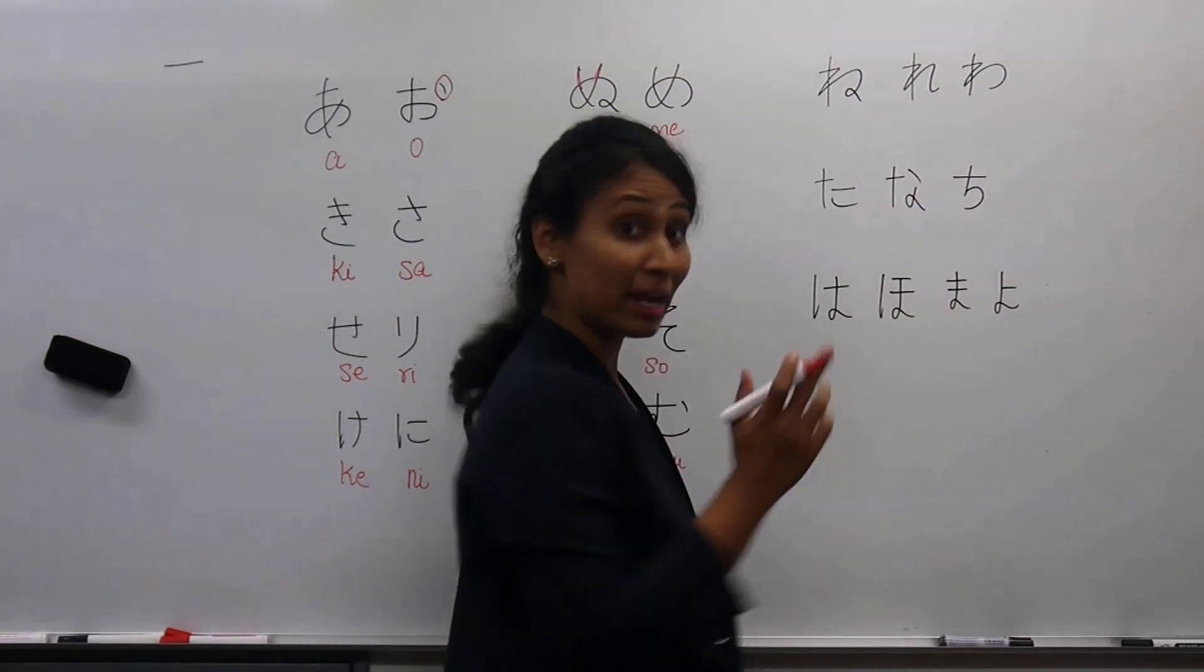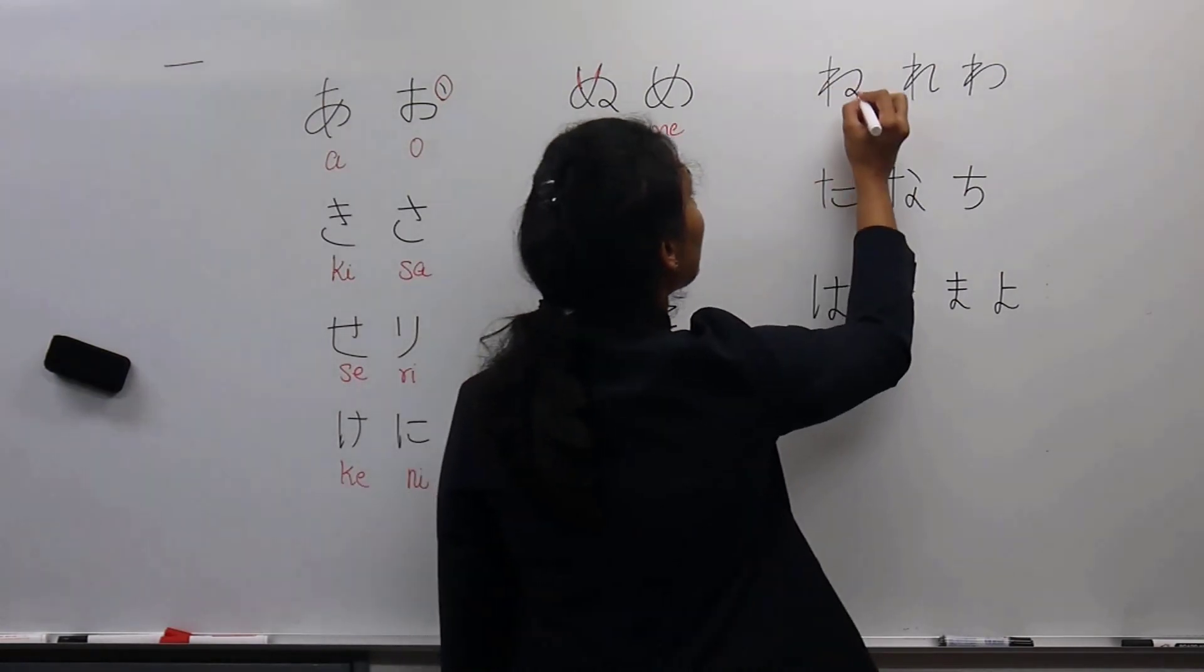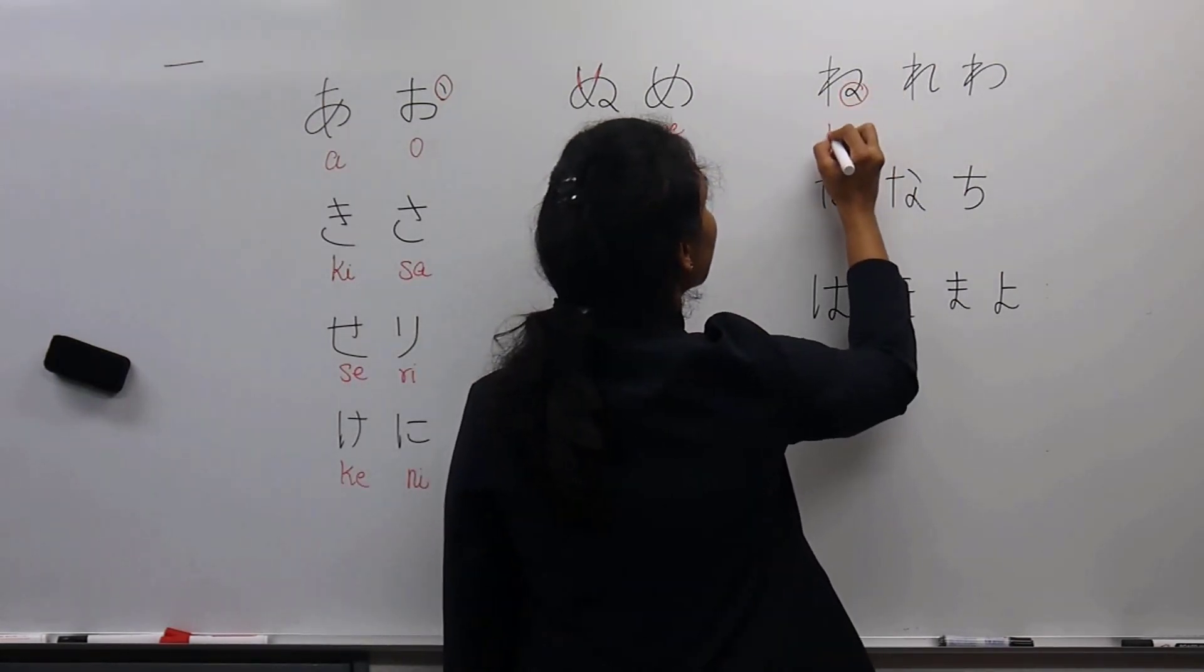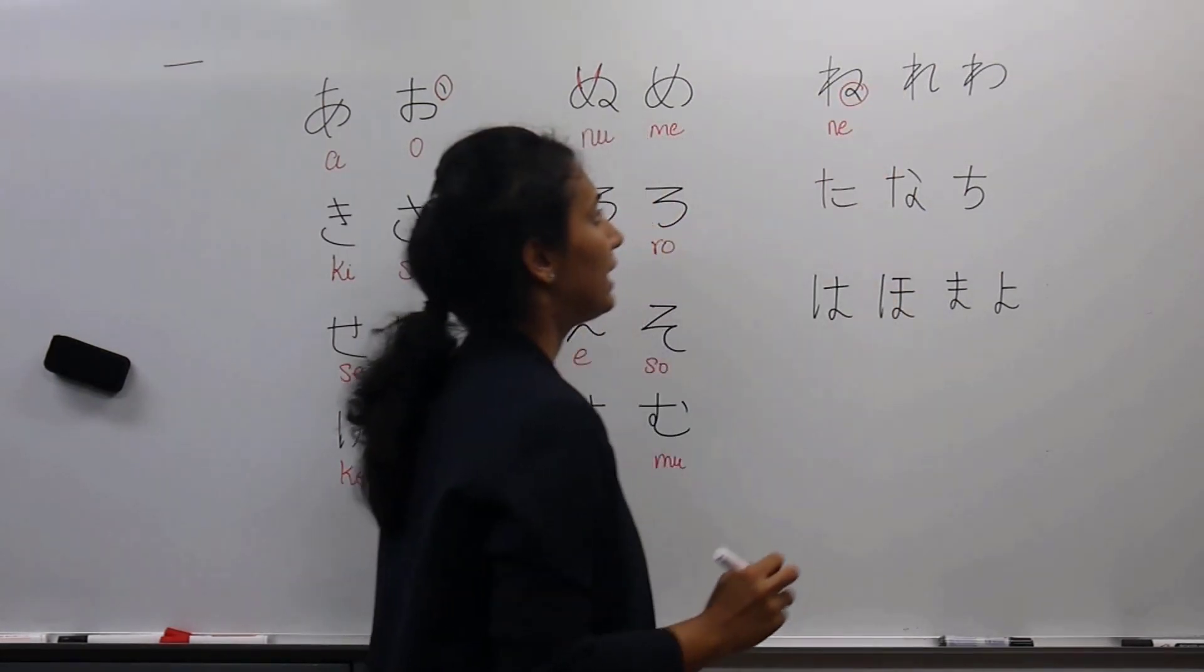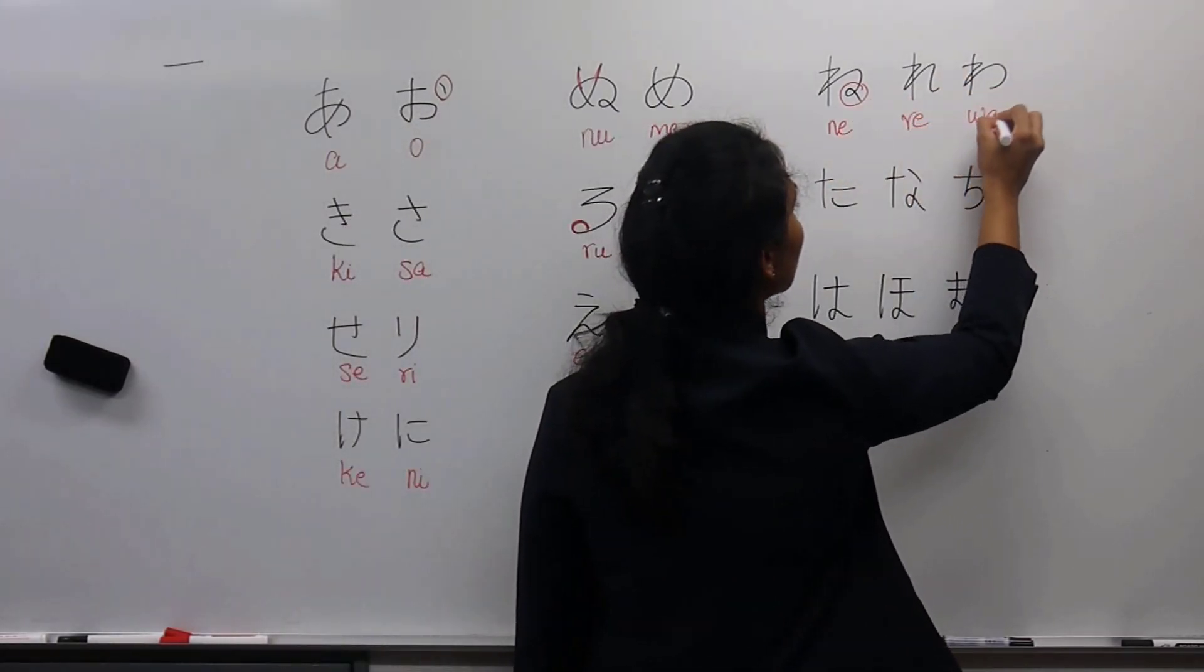These three I had already mentioned when we discussed the characters. If there is a knot below like this, it becomes 'na' series. It is 'ne.' Curled towards outside is 're.' Curled inside is 'wa.'